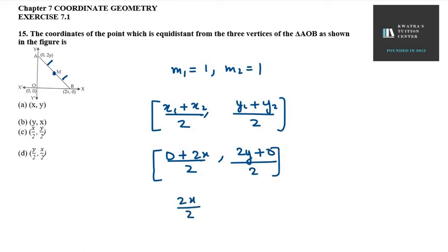So now, 2x over 2 is x only and on the other hand, we have 2y over 2, 2 cancels with 2. So, what do you have? x, y. So, the right option for this is A, that is x, y.